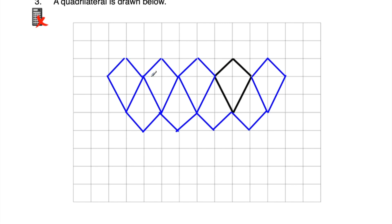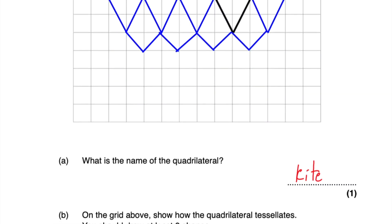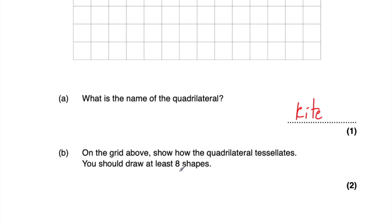As you can see, the kites tessellate - they fit together with no gaps and we could carry on that pattern if we wanted to. It's quite a nice pattern. I've drawn one, two, three, four, five, six, seven, eight more kites on the grid as we were asked to. We've got four that are the right way around and four that are upside down, and we could just carry that on. So part A is a kite, and for part B we've drawn at least eight more to show how the kite tessellates.